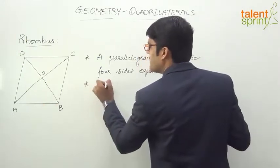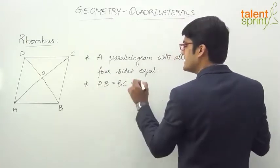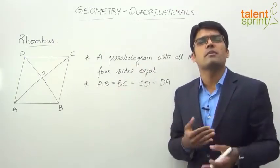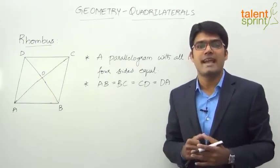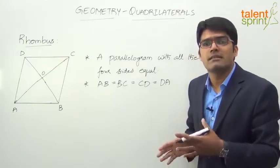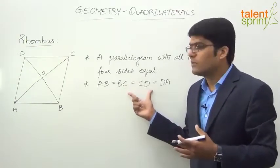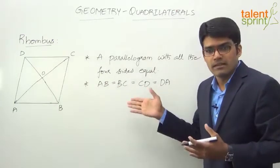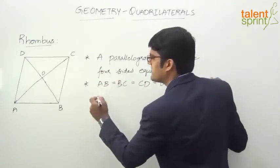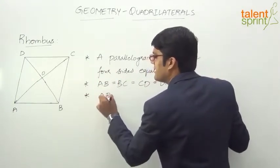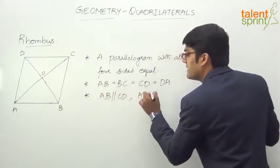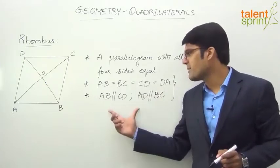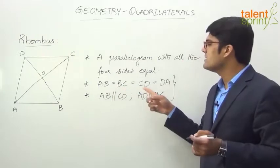This brings us to the conclusion that AB equals BC equals CD equals DA. Since a rhombus is also a parallelogram, the properties of a parallelogram hold true — properties related to sides and angles. For example, the opposite sides are parallel and equal: AD equals BC and AB equals CD. That property is true in case of rhombus as well. The opposite sides are parallel: AB is parallel to CD and AD is parallel to BC. Since all sides are equal, AB equals BC equals CD equals DA.